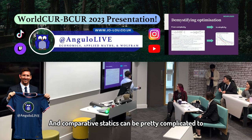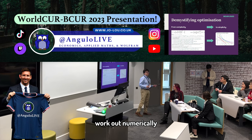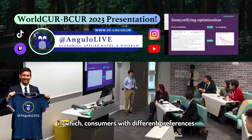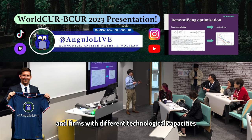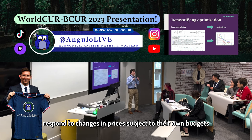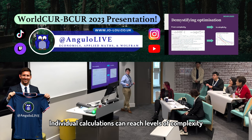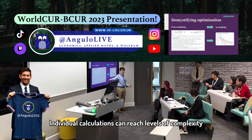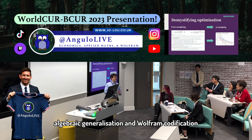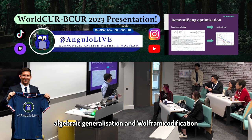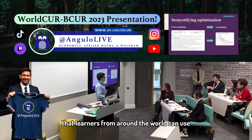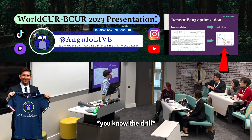Comparative statics can be pretty complicated to work at numerically, especially in microeconomic consumer and producer theory, in which consumers with different preferences and firms with different technological capacities respond to changes in prices subject to their budgets. Individual calculations can reach levels of complexity like the ones shown in the picture to my right. However, I chose to believe in the power of algebraic generalization and Wolfram codification to enhance the visual perspectives that learners from around the world can use, like the ones shown here in the picture to my left.